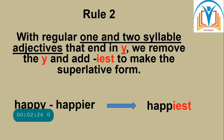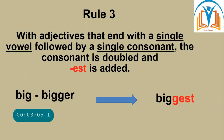Rule two: with regular one and two-syllable adjectives that end in -y, we remove the -y and add -iest to make the superlative form. Look at the example: happy, happier, happiest. We added -iest and removed the -y from happy.